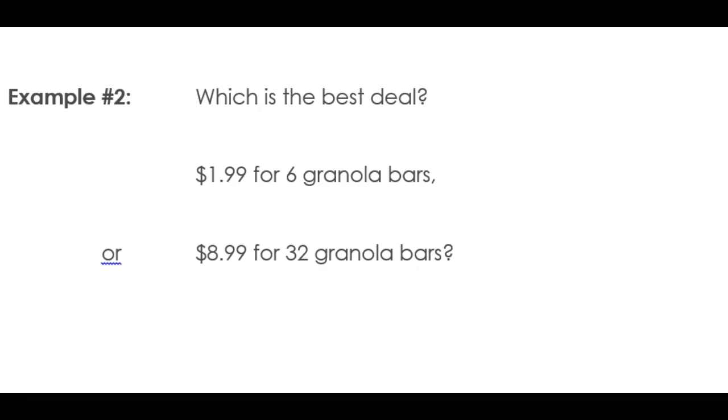I'm going to get the unit rate for a package of six granola bars at $1.99—so $1.99 for six granola bars. In the second case, I have a package of 32 granola bars at $8.99. When I work each out by dividing, $1.99 divided by 6 tells me it's 0.33—that's 33 cents per granola bar.